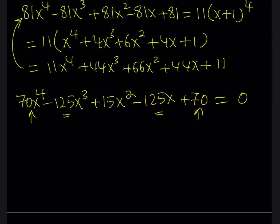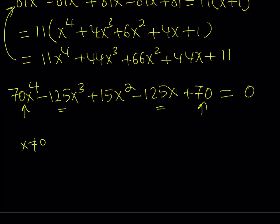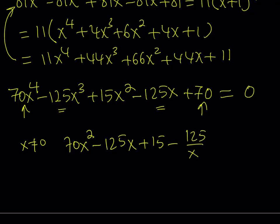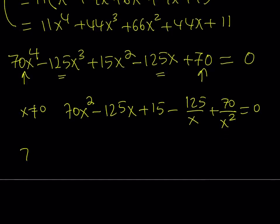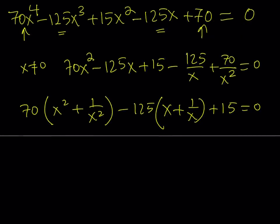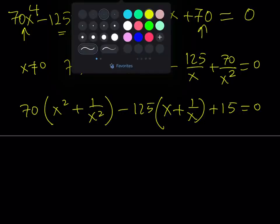We can solve this easily by making a change of variables. We know x does not equal 0, so we can divide everything by x². That gives: 70x² minus 125x plus 15 minus 125/x plus 70/x², which equals 0. Grouping: 70(x² + 1/x²) minus 125(x + 1/x) plus 15. The good thing is we can express x² + 1/x² in terms of x + 1/x, so we can get a quadratic equation from here.